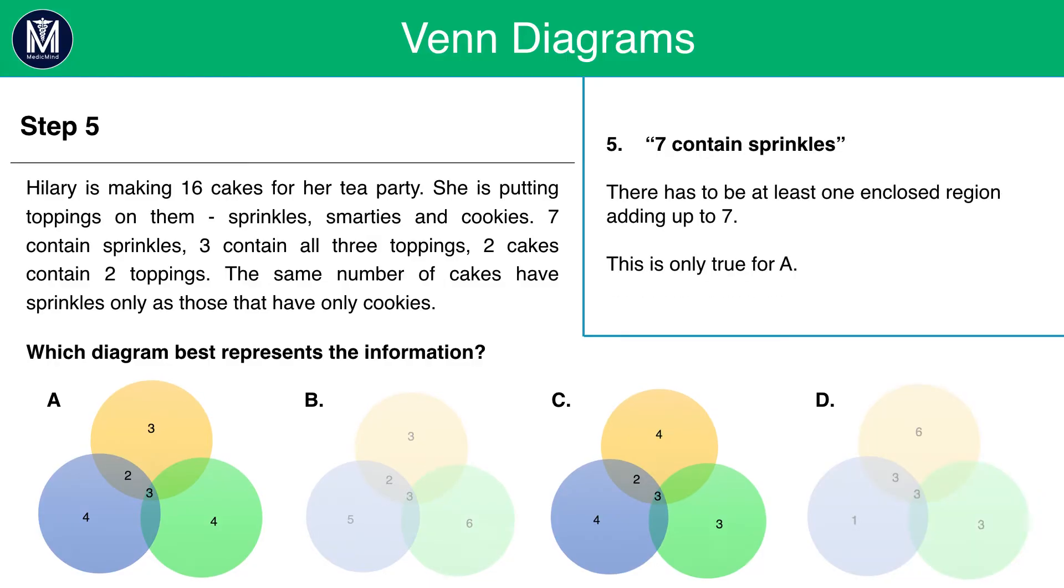Now, the last piece of information about one category. 7 contains sprinkles. This means there has to be one enclosed region that adds up to 7. If we look at C, we see that there is no region that adds up to 7. But for A, there is. This means that A is the correct answer.